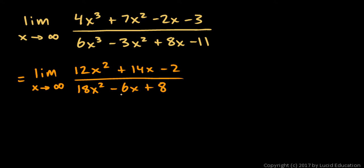Now as X approaches infinity, these are both parabolas. They're still headed towards infinity, both the numerator and the denominator. So we can try applying L'Hopital's rule again. This will be the limit as X approaches infinity of the derivative of the numerator. That's 24x plus 14 over the derivative of the denominator.